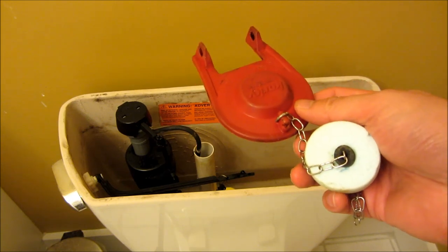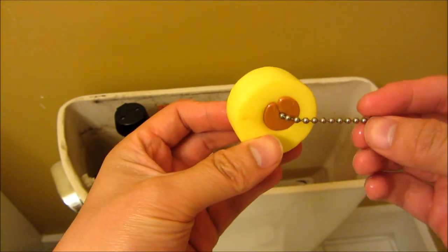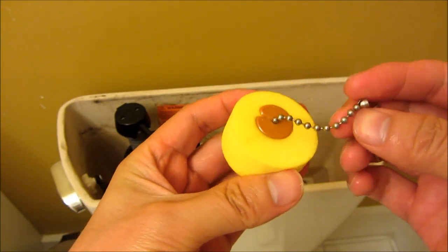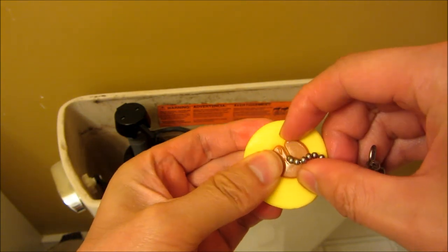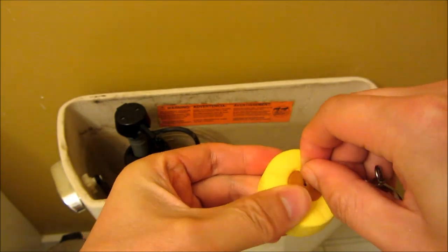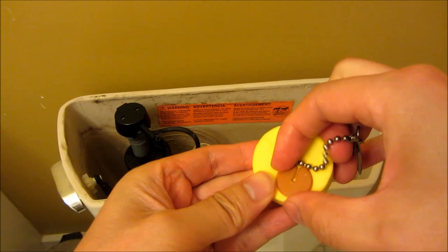For example, if you have this chain-type float and it's locked in by a plastic washer, the way to adjust it—which is less convenient than the rubber washer—is to actually remove these.